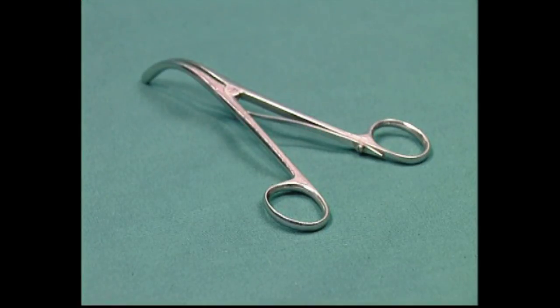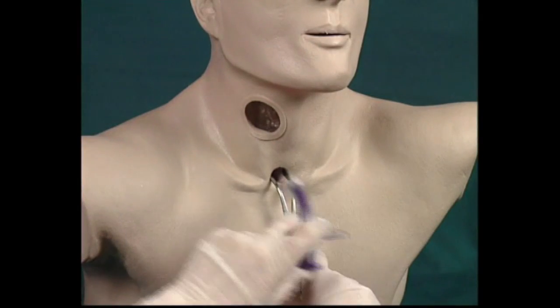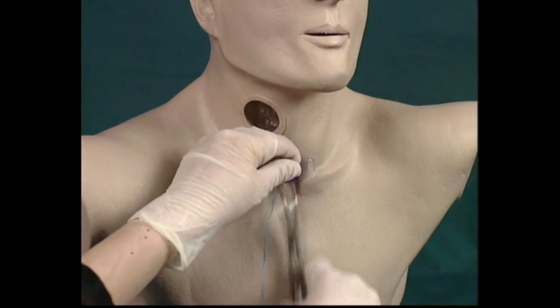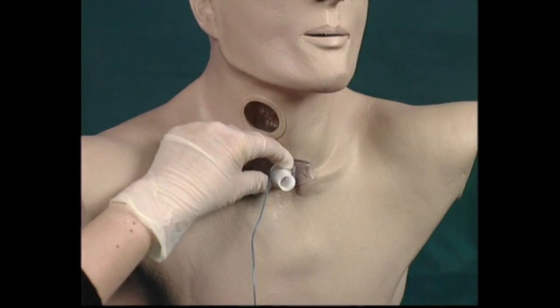Sterile tracheal dilators must always be available as there is the continual risk that a tube may fall out or become misplaced. They are useful at tube reinsertion as they allow the stoma to be held open for ease of guidance of the new tube.